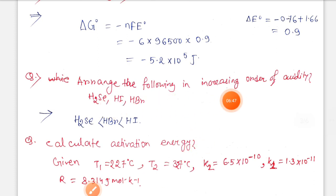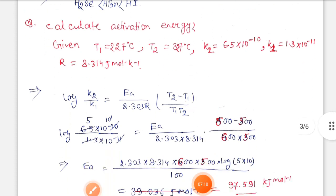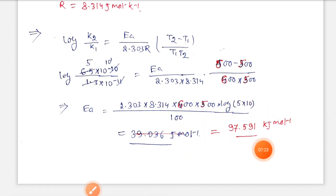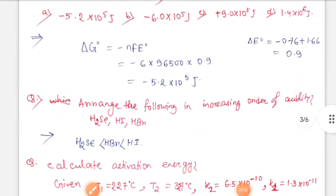Next, arrange in increasing order of acidity: H2O, HI, HBr. We know that HI and HBr are stronger acids than H2O. Calculate activation energy given T1 equals 27°C, T2 equals 37°C. We use this formula: log(k2/k1) equals Ea by 2.303R times (T2 minus T1) by (T2 times T1). If we calculate this, the answer is 97.591 kJ per mole.